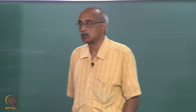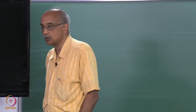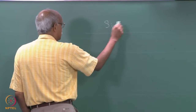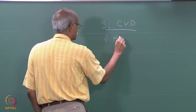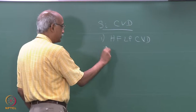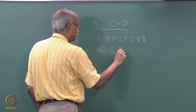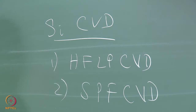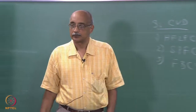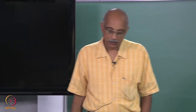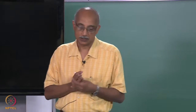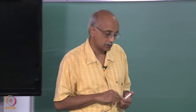Silicon CVD reactors are essentially of three types. One is the horizontal flow low pressure CVD systems which are quite common. The second most frequently used configuration is the stagnation point flow CVD reactors. The third most popular configuration is the fluidized bed CVD reactor. In a horizontal flow CVD reactor, the wafers are mounted parallel to the flow of the fluid and deposition occurs by diffusion across a boundary layer that develops on top of the substrate or wafer.